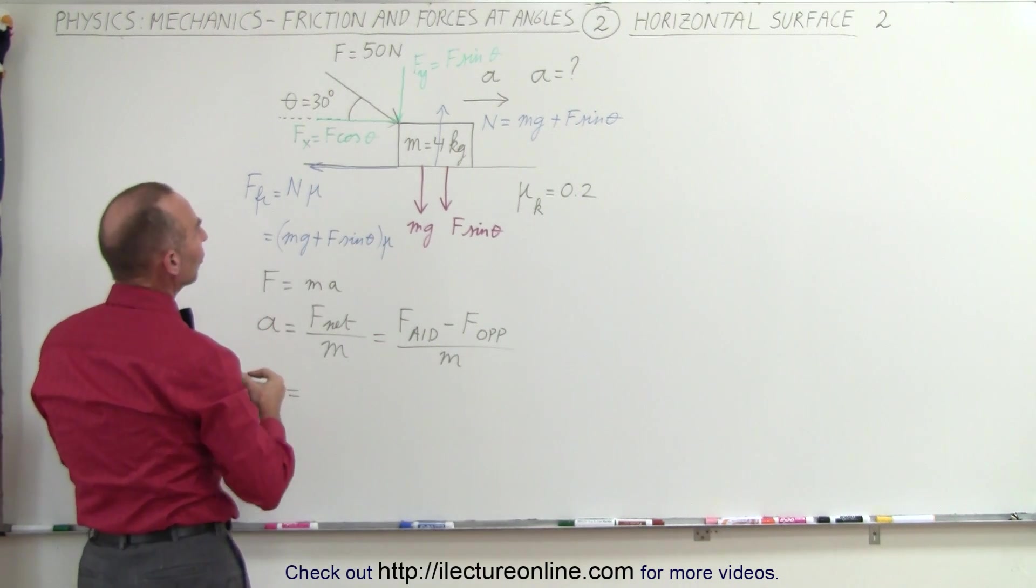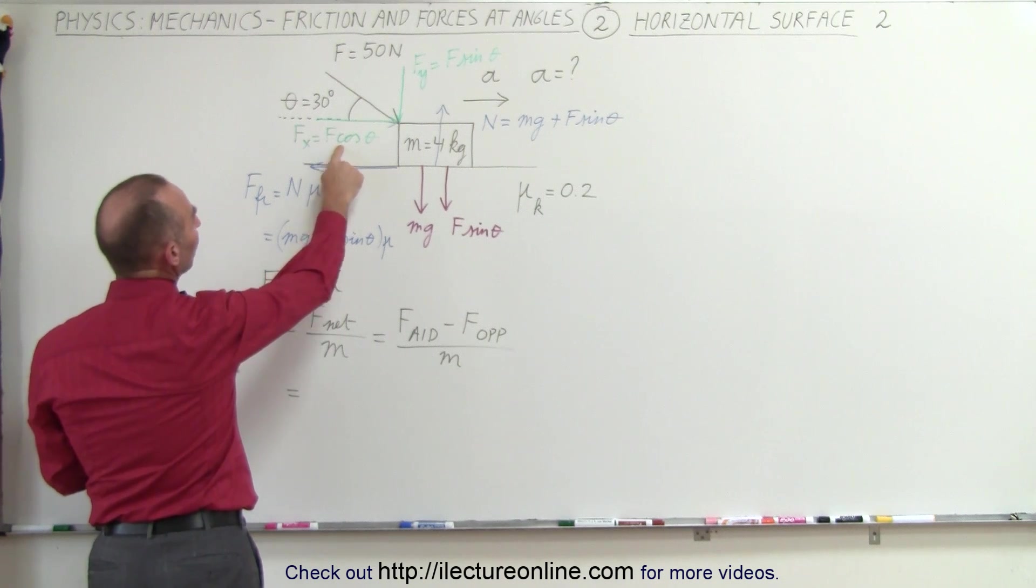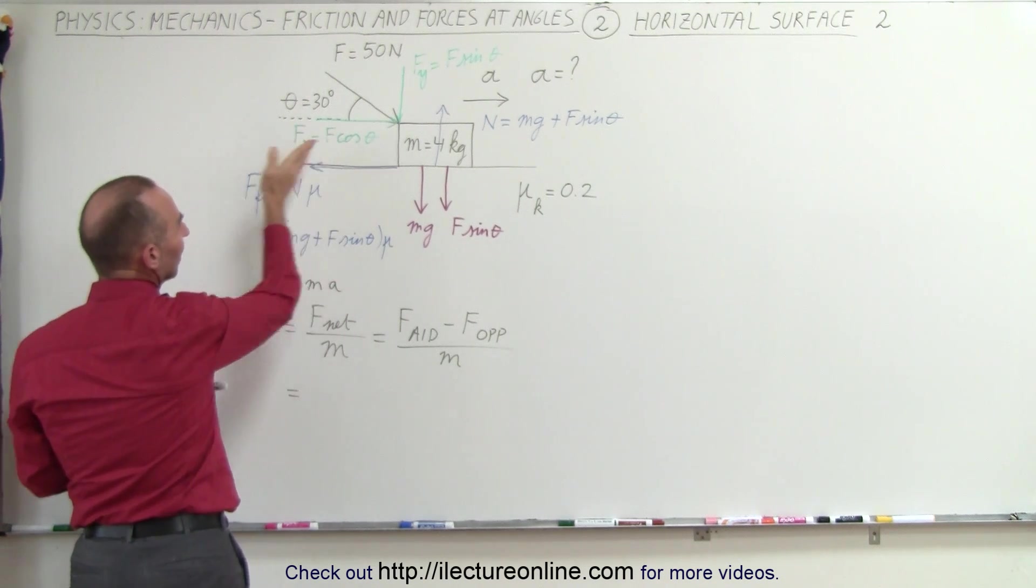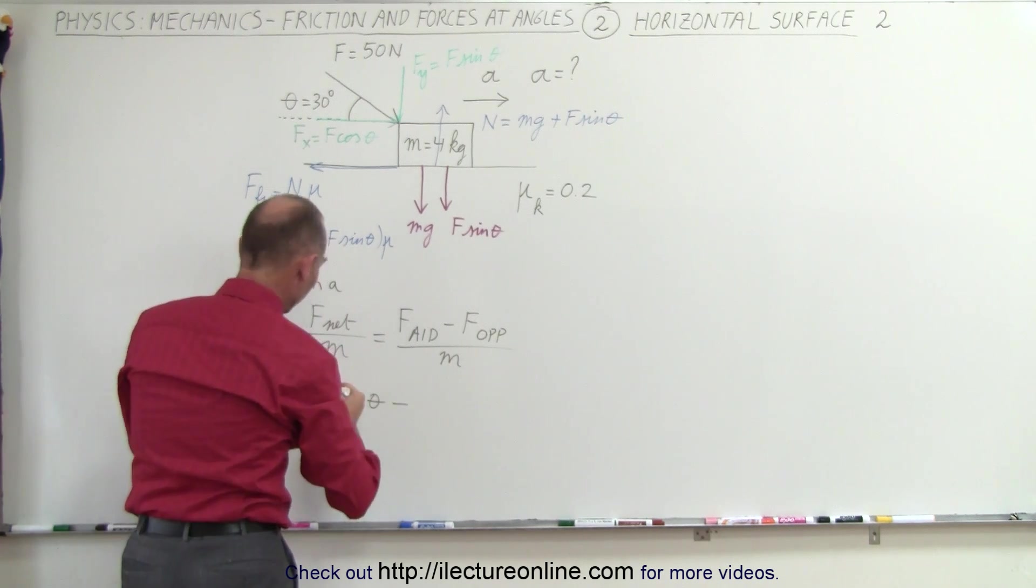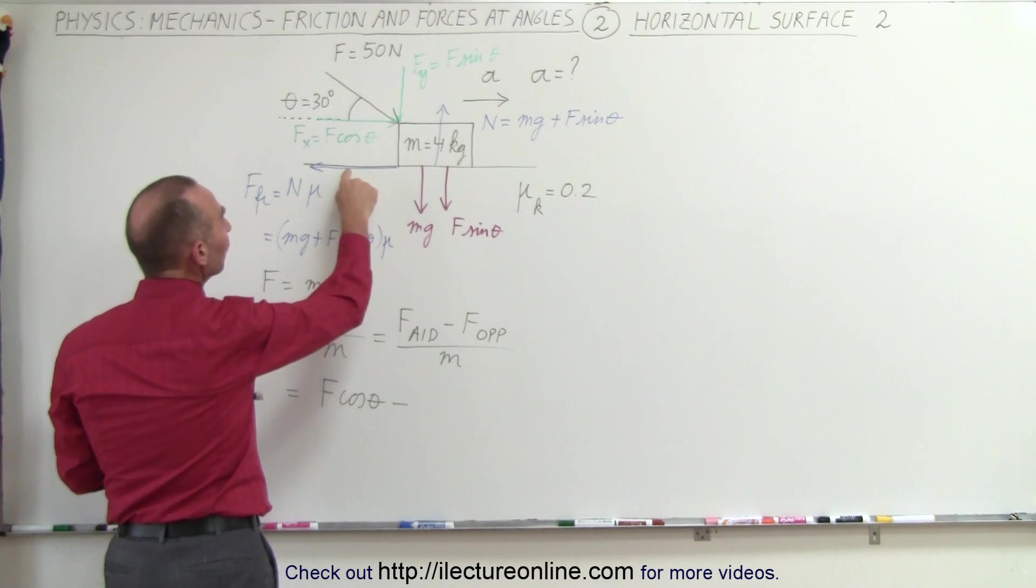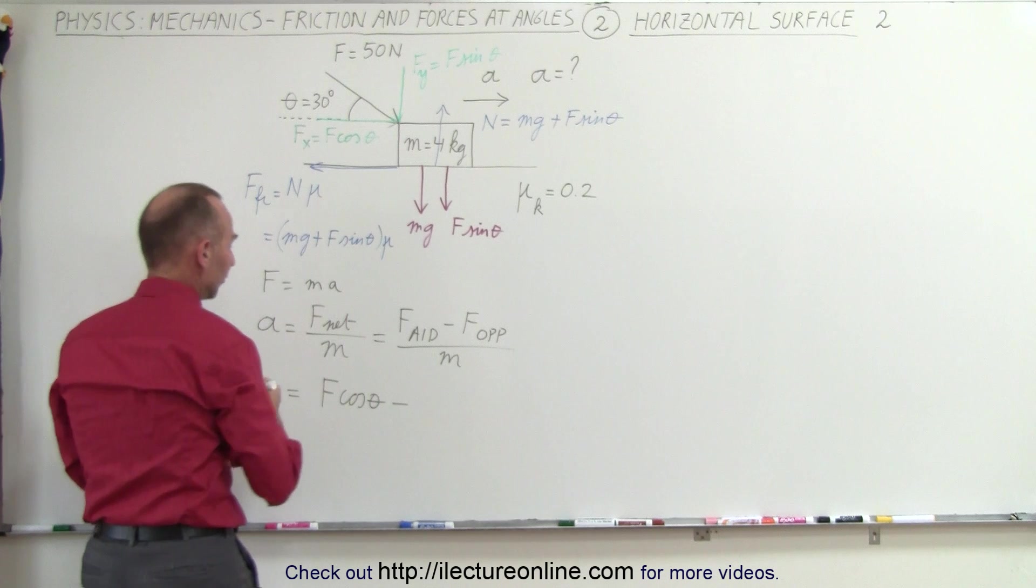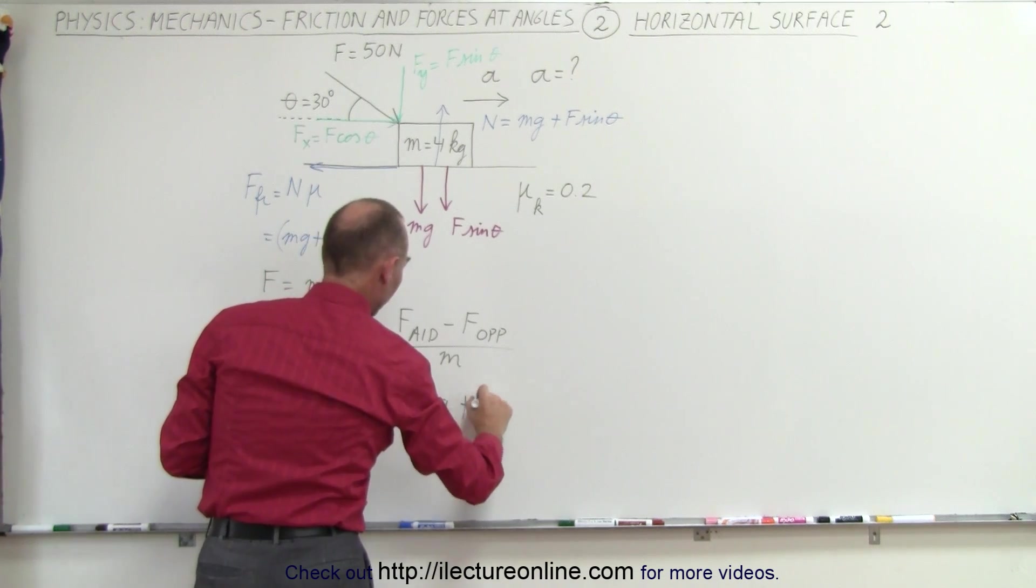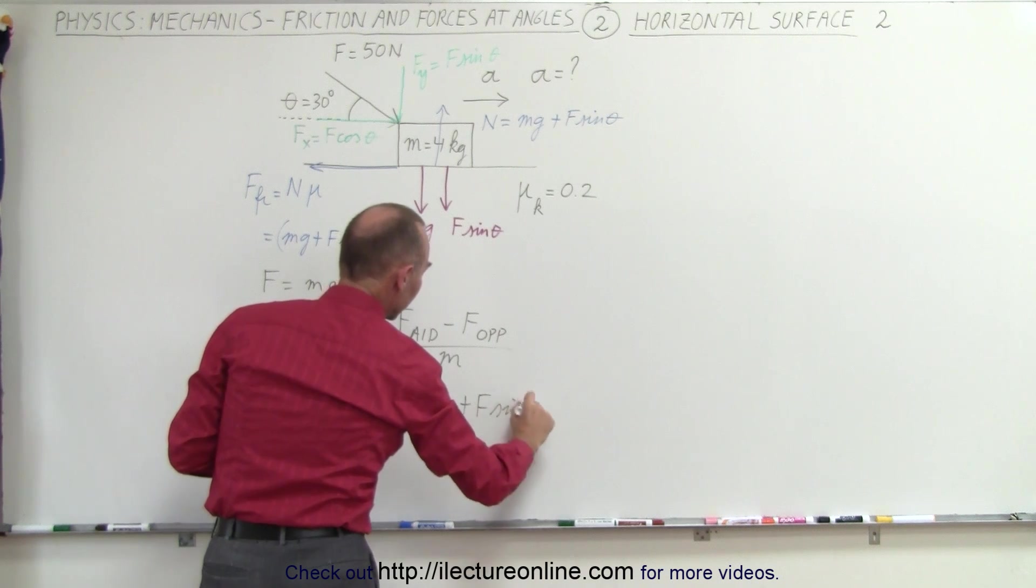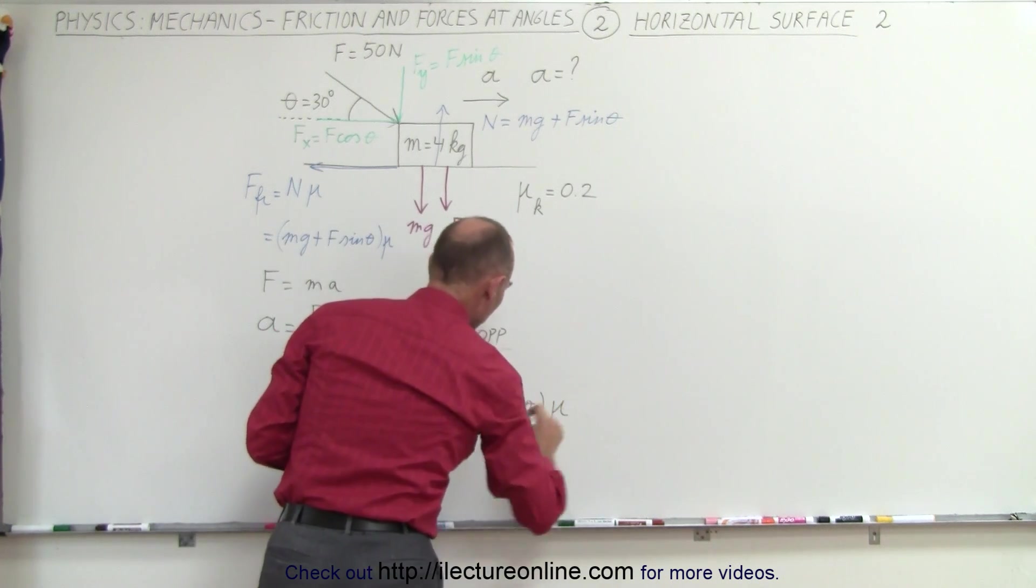The force aiding the acceleration would be this component of the force, f sub x, which is f cosine theta pushing to the right. All the forces opposing would be the friction force pushing to the left, which is mg plus f sine theta multiplied times mu.